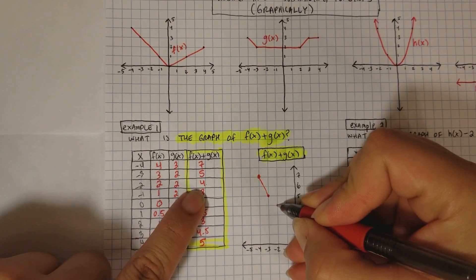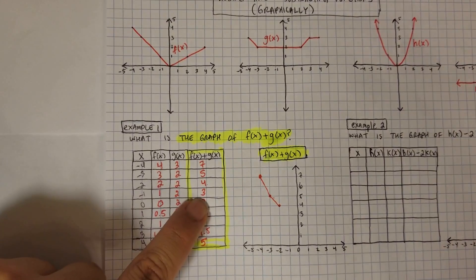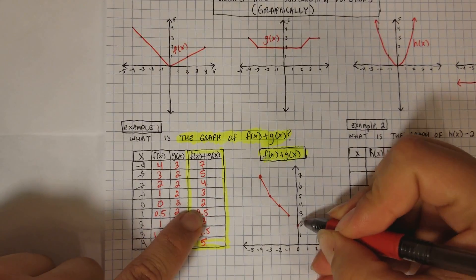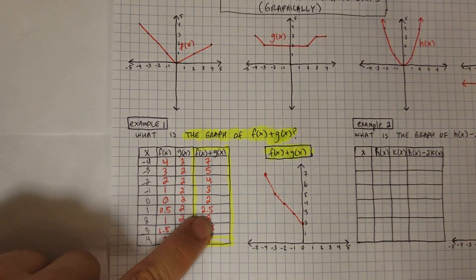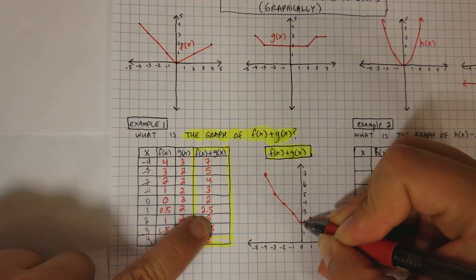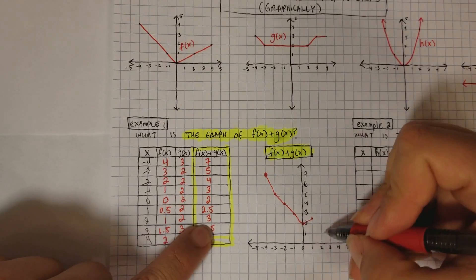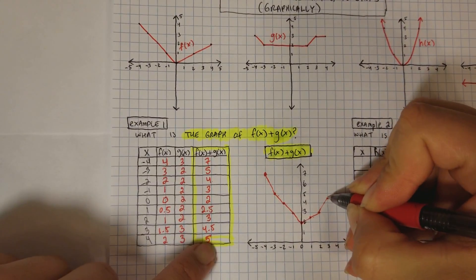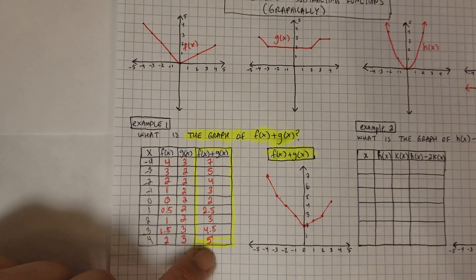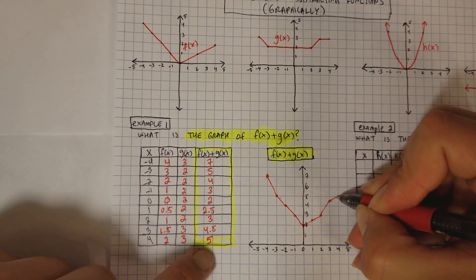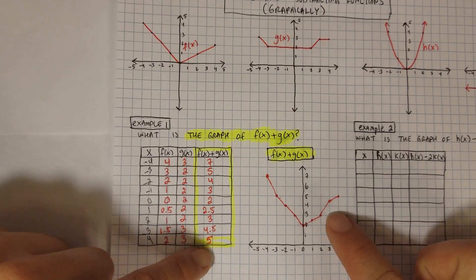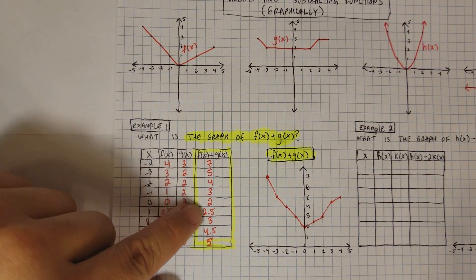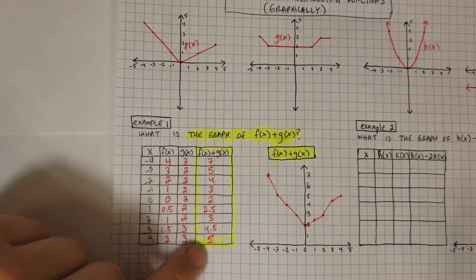At negative 2, I have 4. At negative 1, I have 3. At 0, I have 2. At 1, I have 2.5, so about two and a half. At 2, I have 3. At 3, I have 4.5. And at 4, I have 5 — that's my last point. There is the graph of f(x) + g(x). All you have to do is graph all the points using your x values and y values from the table.